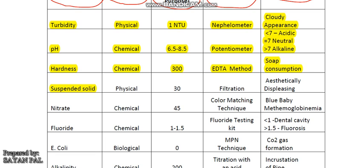Then suspended solids. Because of suspended solids, water aesthetically doesn't look good — it is aesthetically displeasing. It is a physical water quality parameter. Its limit is 30 mg per litre and it is removed by filtration technique.